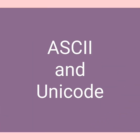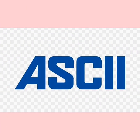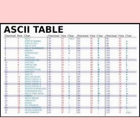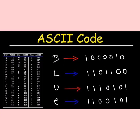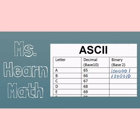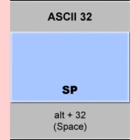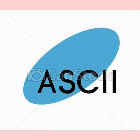ASCII and Unicode: The letters and symbols that we input to a computer have to be converted to a format that can be understood by the computer. This process is called encoding. Initially, this encoding could be done only for 256 characters including the letters and some symbols. This encoding is called ASCII, or American Standard Code for Information Interchange.